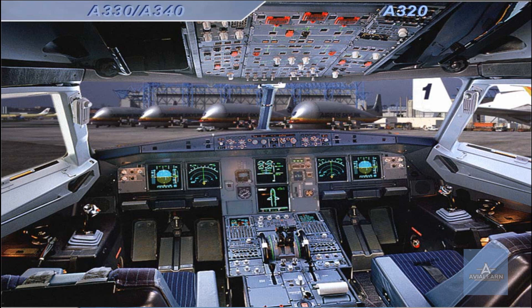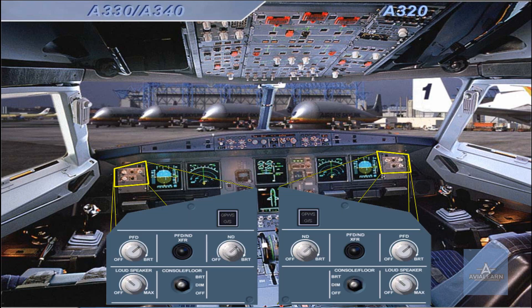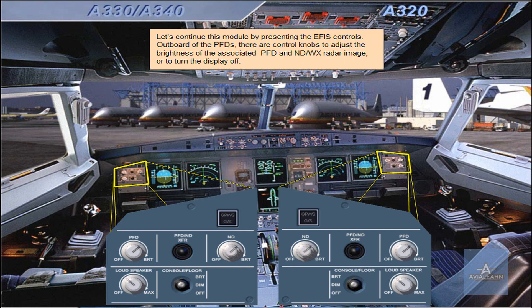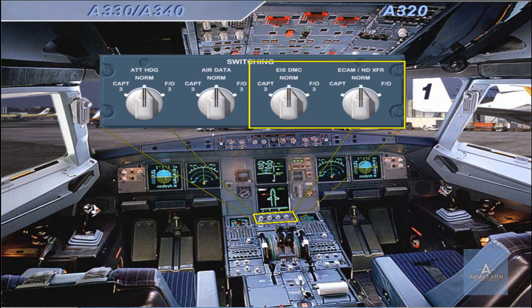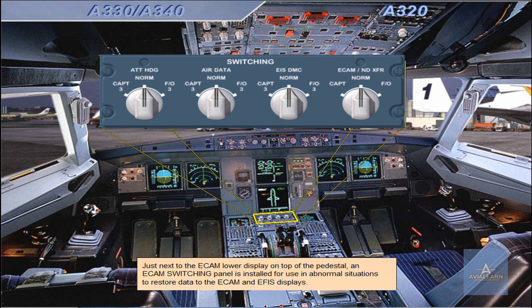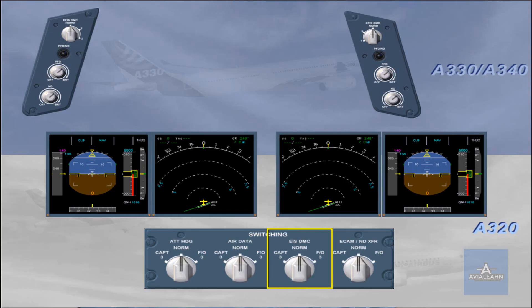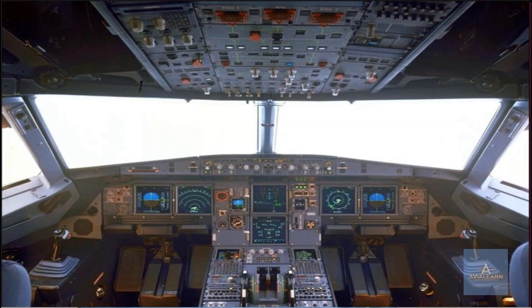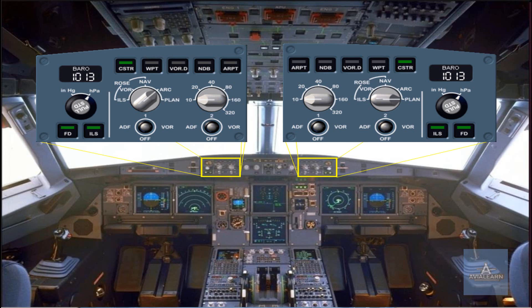Let's continue this module by presenting the EFIS controls. Outboard of the PFDs, there are control knobs to adjust the brightness of the associated PFD and ND weather radar image, or to turn the display off. Just next to the ECAM lower display on top of the pedestal, an ECAM switching panel is installed for use in abnormal situations to restore data to the ECAM and EFIS displays. On the A320, one EFIS DMC selector is mounted to allow the pilots to manually select the data source. On the Long Range, two DMC selectors are mounted to each outboard side of the cockpit for manual selection.